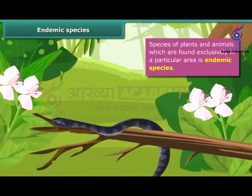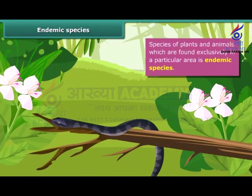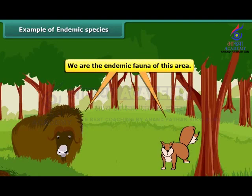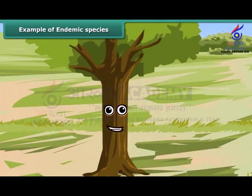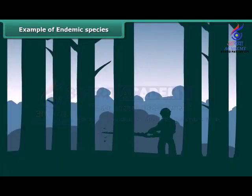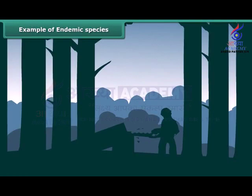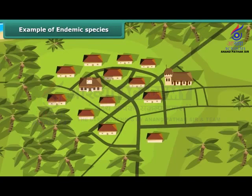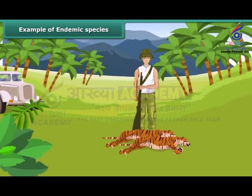A particular type of animal or plant may be endemic to a zone, a state, or a country. Humans are the main reason endemic species are threatened. The destruction of their habitat, increasing human population, and introduction of new species may affect the natural habitat of endemic species and endanger their existence.